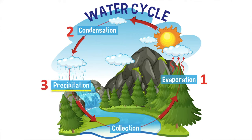Then water falls as precipitation. This occurs when the droplets in the clouds become too big and too heavy for the air to hold them, so they fall as precipitation. Precipitation can take many forms, including rain, hail and snow.